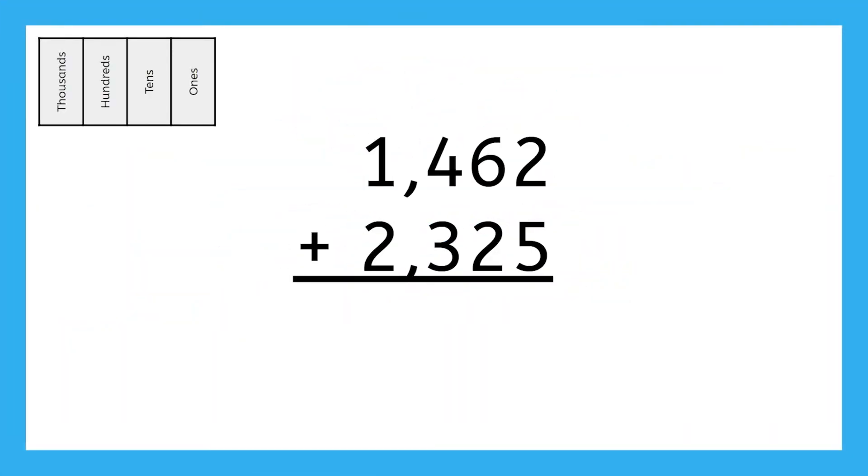When using the addition algorithm, it's important to start with the smallest place first. My ones place shows I need to add two ones and five ones. That equals seven ones, so I'll record the digit seven in the ones place for my answer. We'll move on to the tens place next, where we have six tens plus two tens. That equals eight tens, so I'll record the digit eight in the tens place for my answer.